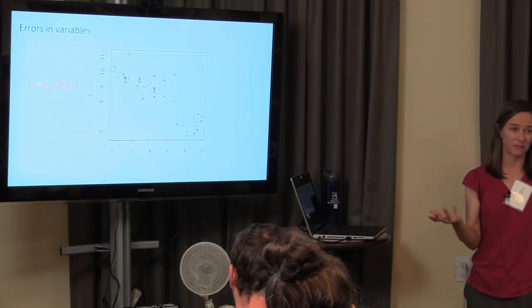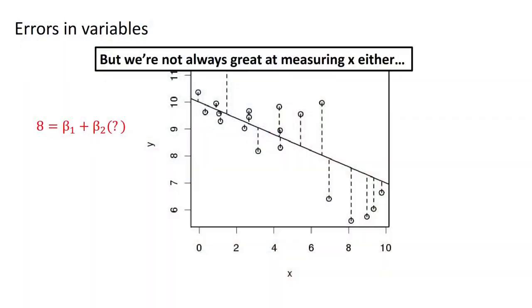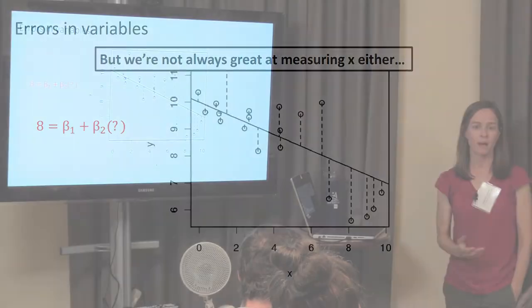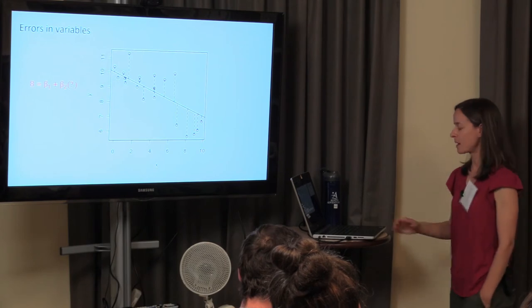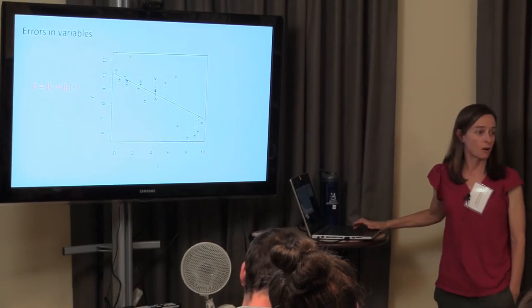You can imagine that if there's error in X and you're trying to use X to make a prediction, then that error is going to propagate out and also be in your prediction. If you haven't somehow accounted for it or described it, then it makes your prediction overconfident.